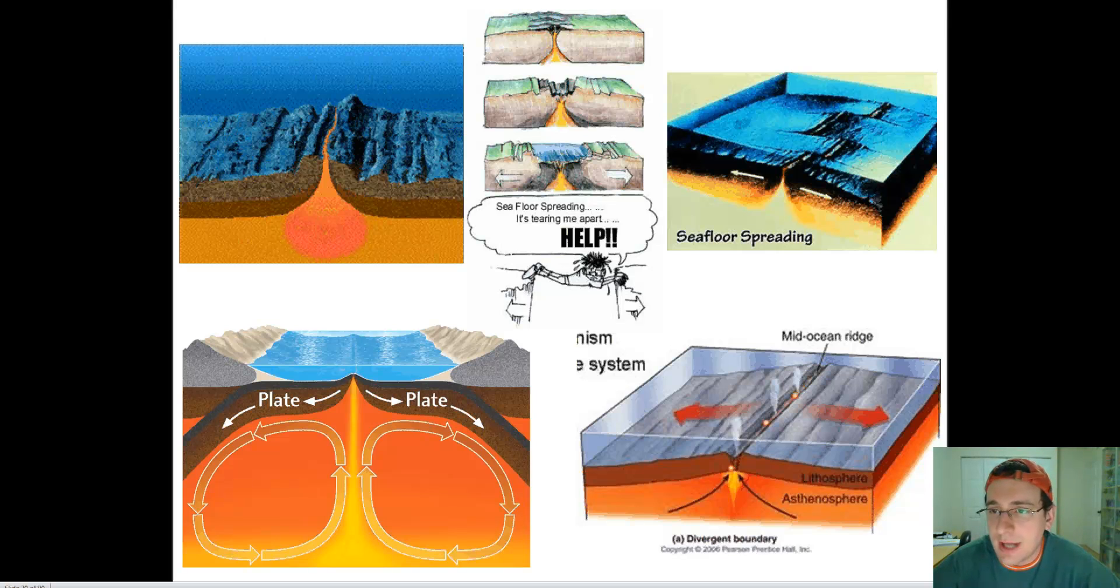Until the 1940s or the middle of the 20th century, we didn't really know what this missing mechanism was. But once we started using sonar in war to find submarines and things hidden under the water, we soon realized that the shape of the ocean bottom was actually very intriguing.